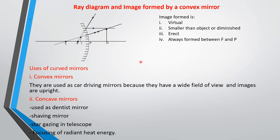For a convex mirror, these are the general characteristics of the image formed regardless of where the object is placed: the image is virtual, it is smaller than the object, it is erect, and it is always formed between the pole and the focal point. Convex mirrors are not like concave mirrors in this respect.